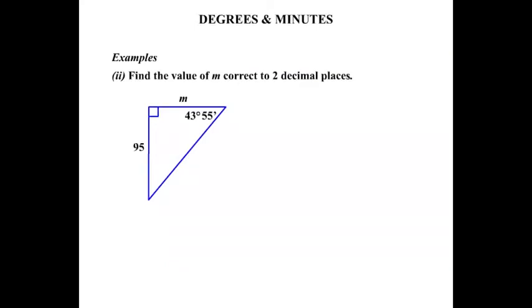Excellent. Example 2. Now find the value of m, correct to two decimal places. Well some old hags can't always hide their old age. Identifying the two sides from the angle there. Directly opposite is 95, so that is our opposite side. M is next to the angle, so it is our adjacent side. So we have opposite and adjacent. So we're going to be using the tan ratio. So we're using tan, the angle is 43 degrees 55 minutes. So we're going to write tan of 43 degrees 55. And that equals the opposite over the adjacent. So look at your diagram very carefully. It's going to equal the 95 over the m.